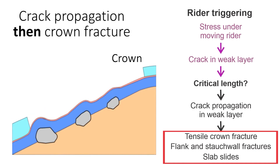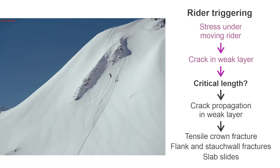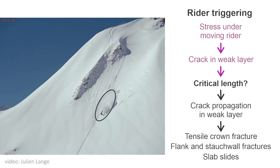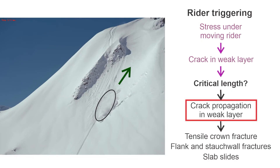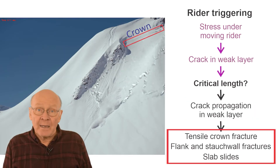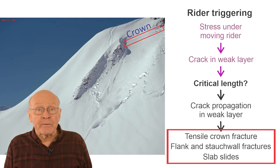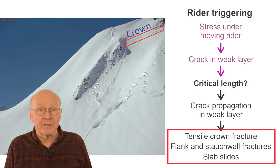But don't believe this animation — let's look at the process in the real world. Here we see a rider landing, then falling down a slope. Somewhere around here, the rider started the crack in the weak layer. Now, as a result of the crack propagating upslope, we see the crown fracture. In the field, we see the crown fracture on the surface, but not the crack propagation in the weak layer that causes the crown fracture.